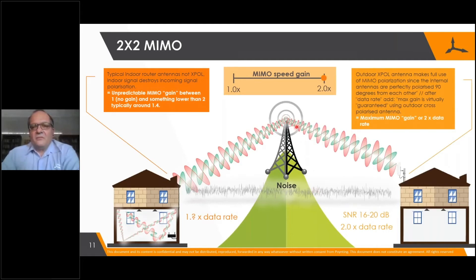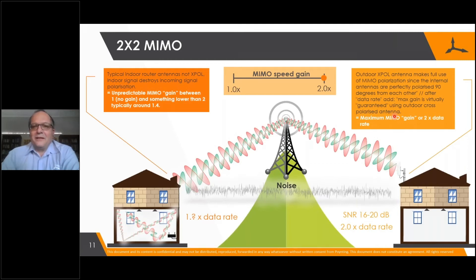The beauty of two by two MIMO is that if you use a cross-polar antenna — in other words, an antenna polarized 90 degrees to the other one — and it is outdoor, so the polarization is preserved all the way from transmitter to receiver, you are absolutely guaranteed to get 2.0 times gain. And it's not even 1.95 — it is typically exactly two times the maximum rate.